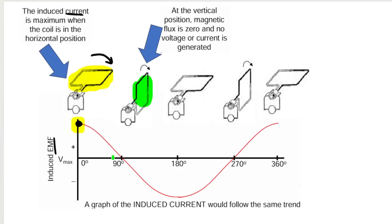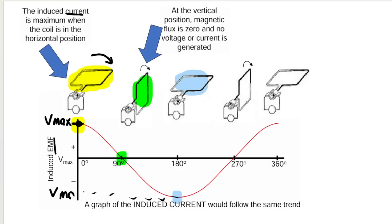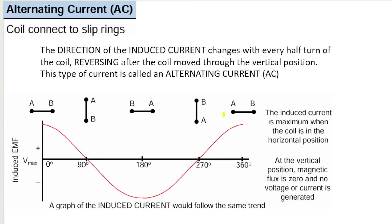When it's in the vertical position, we're at zero on the graph — no voltage. Then it rotates again, it's flat again, but because this is an AC generator, we reach a maximum in the negative direction. So one Vmax is in the positive direction and the other Vmax is in the negative direction — opposite directions. Then it reaches a vertical position again at zero, and then it's back to where it started, at a maximum in the original direction. That is how we draw the graph for an AC generator.